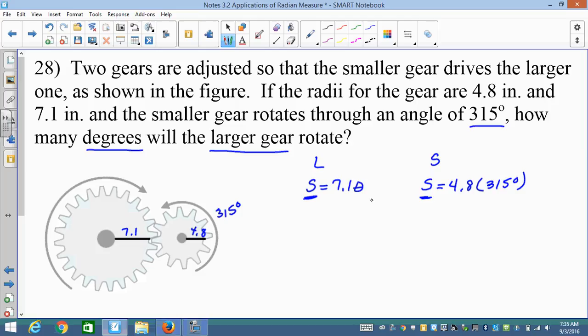So this guy went 315 degrees. This is larger, so his angle should be smaller. So I have 7.1 theta equals 4.8 times 315. So 7.1 theta equals 1512.